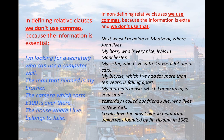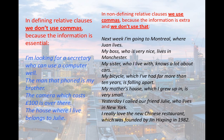'My mother's house, which I grew up in, is very small' — the relative clause refers to the subject, placed between commas in the middle. 'Yesterday, I called her friend Julie, who lives in New York' — who lives in New York is extra information referring to the object, so it comes at the end after a comma. 'I really love the new Chinese restaurant, which was founded by Jin Hicks-Ping in 1982' — which refers to the object of the verb in the main clause, so the relative clause is located after a comma at the end.